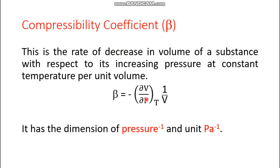According to Boyle's law, volume and pressure are inversely proportional, so del V by del P must be a negative term — this represents the decrease in volume with increase in pressure if temperature is kept constant. Per unit volume means it is divided by the total volume. So the compressibility coefficient beta is the rate of decrease in volume of a substance with respect to its increasing pressure at constant temperature per unit volume.